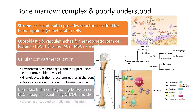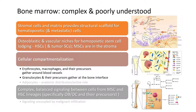Hematopoietic stem cells are found around blood vessels along the endosteal surface, and give rise to cells such as megakaryocytes, red cells, white cells, etc. There is a cellular compartmentalization of the bone marrow: erythrocytes, macrophages and their precursors are found around blood vessels, while granulocytes and their precursors tend to be found at the bone interface.